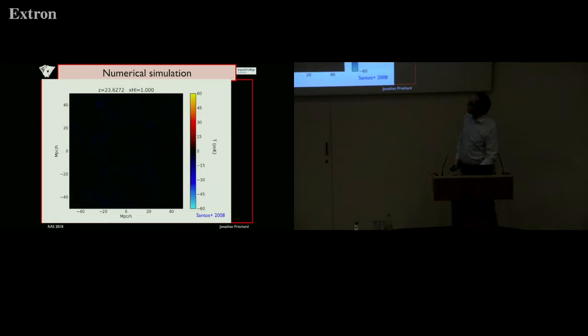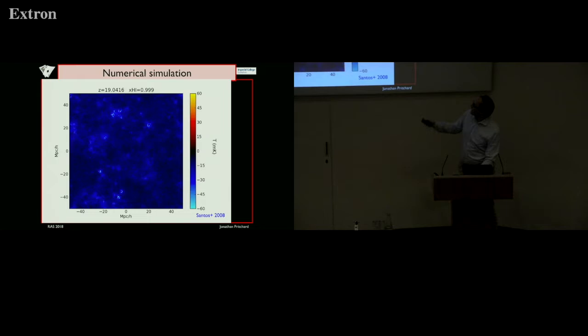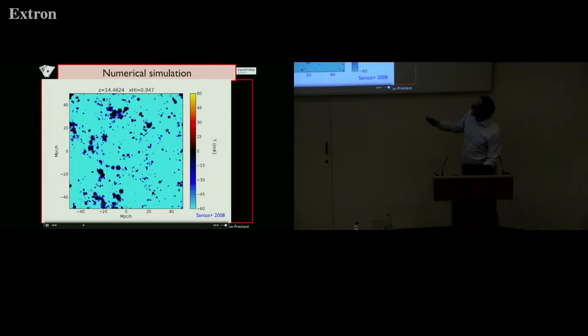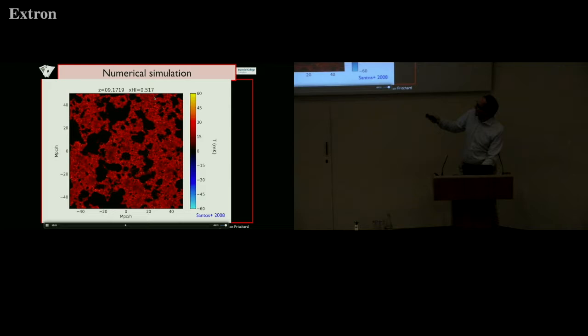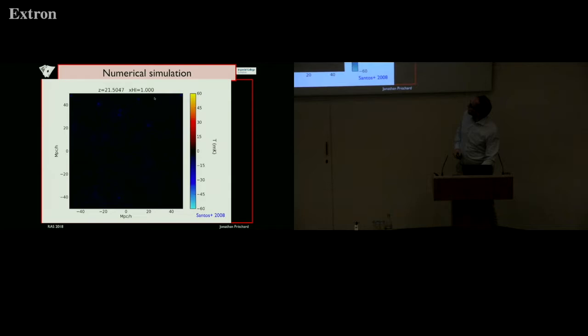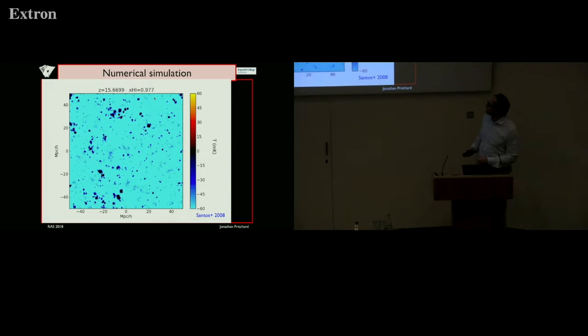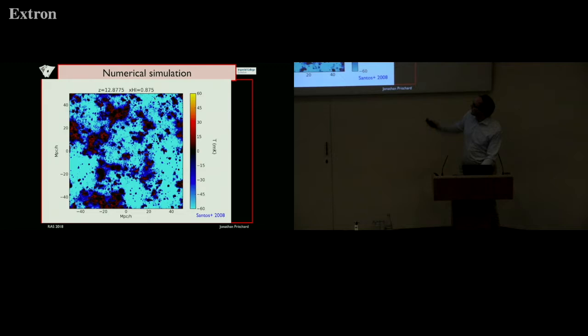To give an impression of what that looks like, I want to show this simulation movie, which is about 100 megaparsecs on a side, going from a redshift of 25 decreasing in redshift. Blue is cold gas, red is hot gas. The blue gas initially is coupled and cold. We start to get heating in red regions. Eventually, with lots of X-ray heating from compact objects, the gas all becomes hot. Then you move into a phase where you have ionized black bubbles slowly growing. This is the kind of thing radio telescopes like the Square Kilometre Array hope to image as a function of frequency, to see the evolution over time.